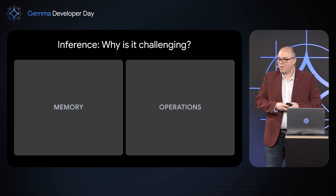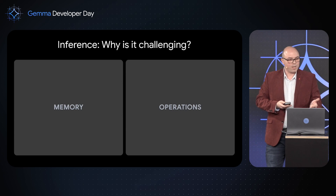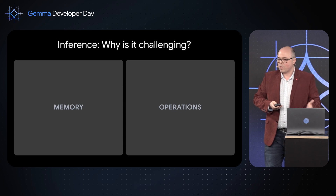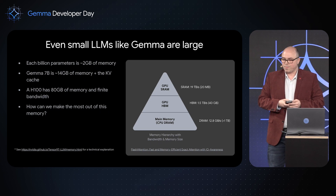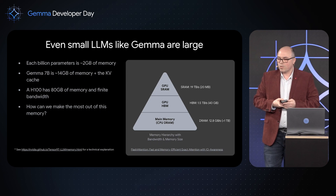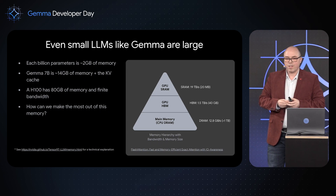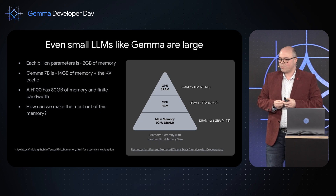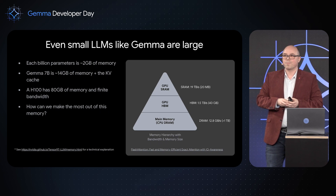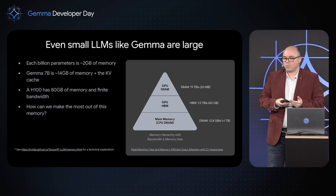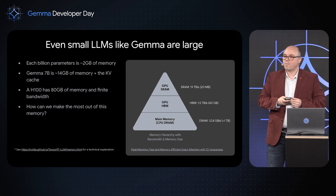These models are large in many different ways — they consume a lot of memory and a lot of memory bandwidth, and they can be computationally demanding, especially when you truly care about latency. Let's look at a tangible example: Gemma consumes about two gigabytes of memory for every billion parameters, and that's weights alone. This doesn't account for temporary memory for activations between layers, nor the KV cache needed to avoid recomputing the same information. The larger variants require sizable amounts of fast memory.